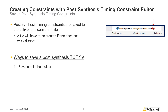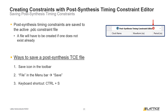The first way is to select the save icon from Radiant's toolbar. The second way to save post-synthesis constraints is to select File from Radiant's menu bar, then Save from the drop-down list of options that appears. The third way post-synthesis constraints can be saved is using the Ctrl+S keyboard shortcut. If there is not already an active PDC file in the current implementation for a project, users will be asked to create a new file when saving their constraints.